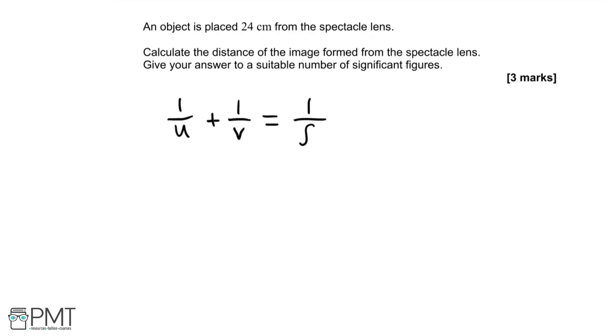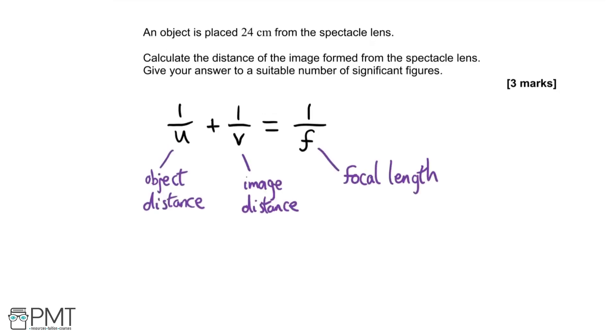An object is placed 24 cm from the spectacle lens. Calculate the distance of the image formed from the spectacle lens, giving your answer to a suitable number of significant figures. For the first mark, write down and use the formula: 1 over u plus 1 over v equals 1 over f, where u represents the object distance, v represents the image distance, and f represents the focal length. Substitute in the values we know: u and f.